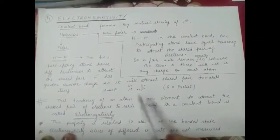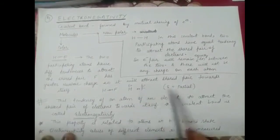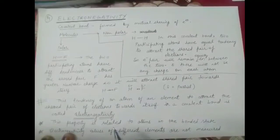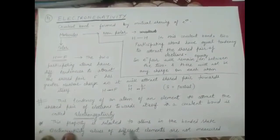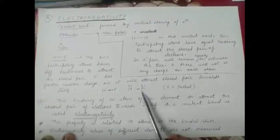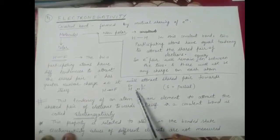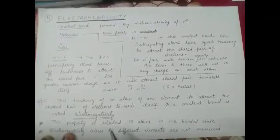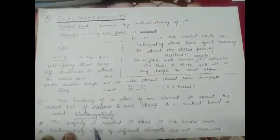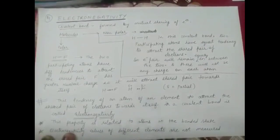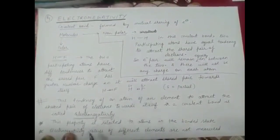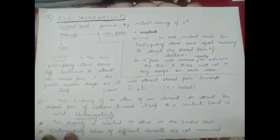Since the electron pair is shifted closer to fluorine, the two atoms acquire charge. Fluorine acquires a partial negative (δ−) charge — 'partial' means it is not a complete negative charge; fluorine has not fully accepted the electrons inside its atom, the pair is only shifted towards it. Hydrogen, with electrons away from it, acquires a partial positive (δ+) charge. This development of charge is known as polarity, and such molecules are called polar molecules.